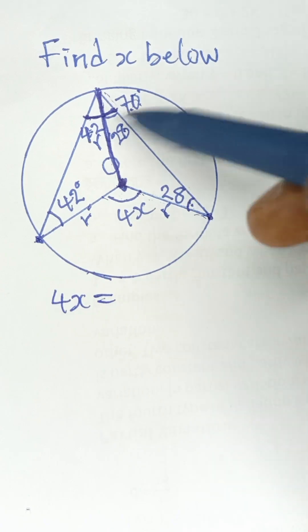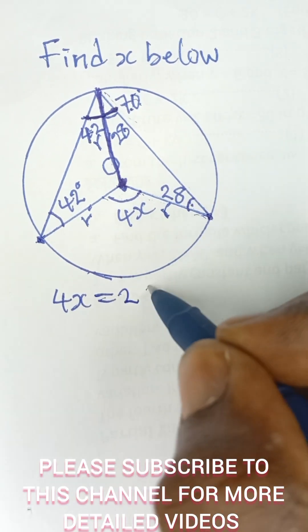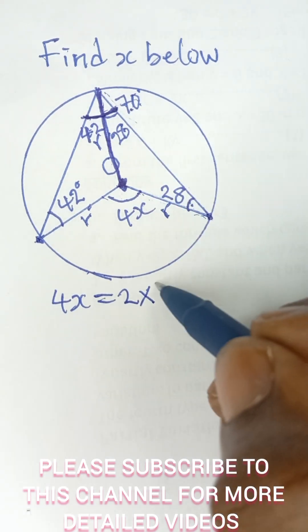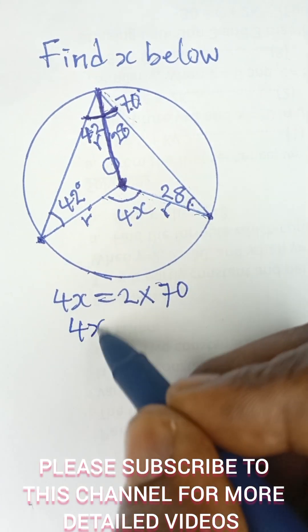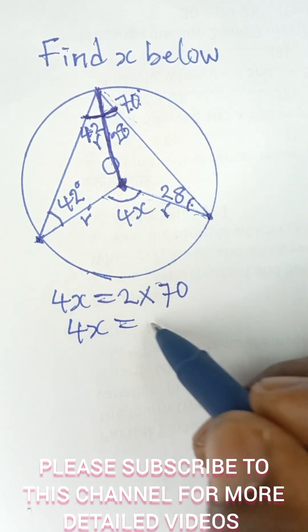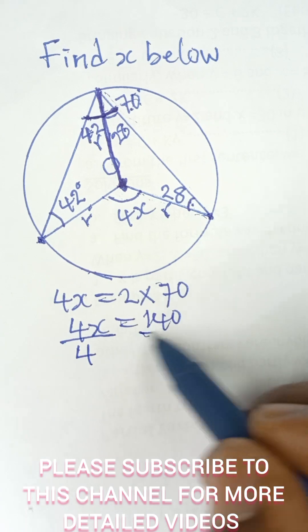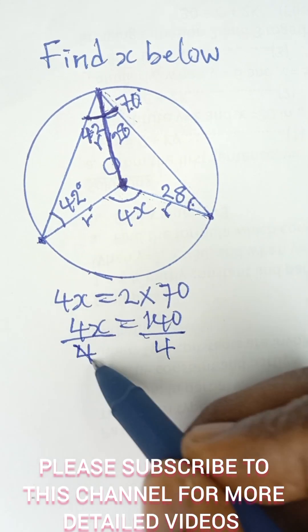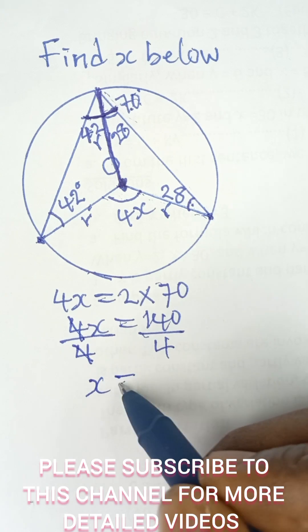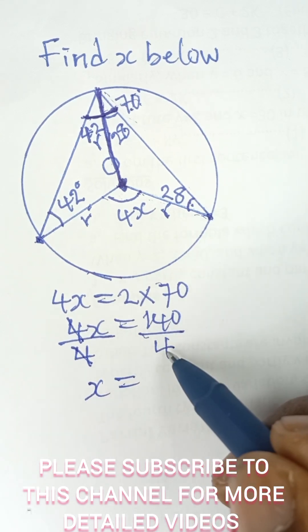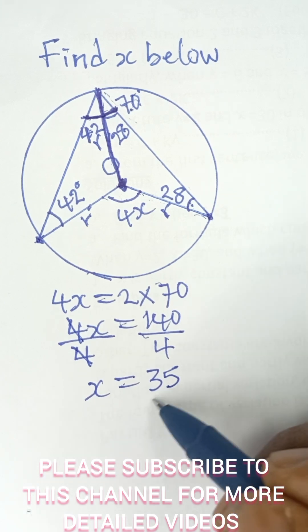So angle at center, which is 4x, is equal to twice the angle at circumference, which is 2 multiplied by 70. So 4x is equal to 2 times 70, which is 140. To get the value of x, we divide both sides by 4. Divide this by 4, 4 cancels 4, and we are left with x on this side. And then 140 divided by 4 gives us 35, so the value of x is 35.